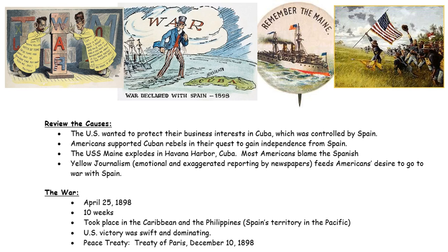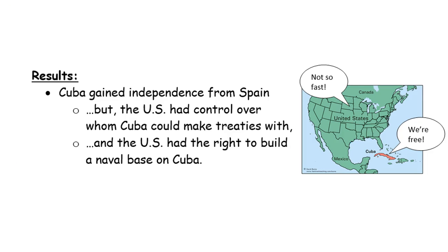So what happens as a result of the Spanish-American War? How does this change America's history? The first thing is that the Cubans do gain their independence. That is one of the reasons the United States stated it was going into war — to assist the Cubans in their independence movement. However, this independence has a little asterisk next to it.